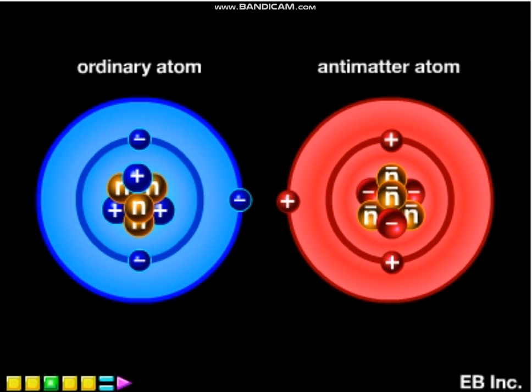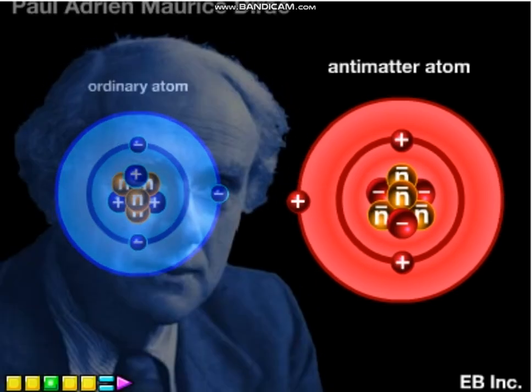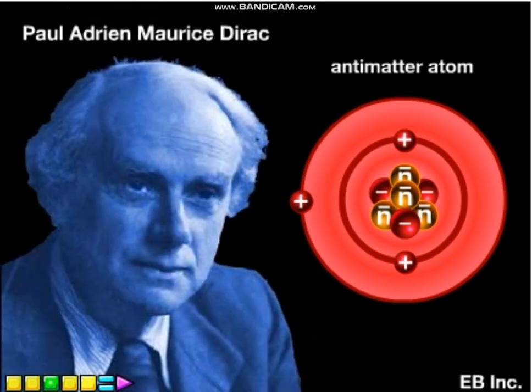The first mention of antimatter in scientific literature came in 1930 in the work of the physicist Paul Adrian Maurice Dirac. His work on the energy states of the electron led him to predict the existence of the positron, a particle identical in every respect to the electron, except for the fact that it has a positive charge instead of a negative one. Such a particle was subsequently produced in laboratory experiments.